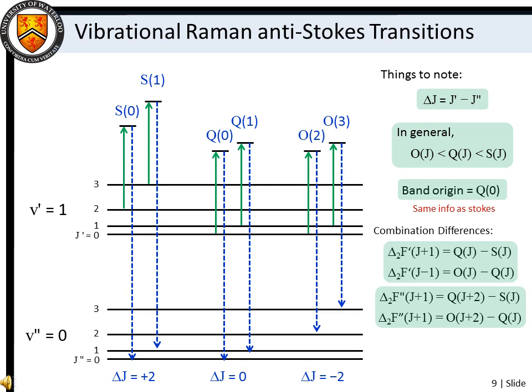In contrast to vibrational Stokes transitions, vibrational anti-Stokes lines are associated with de-excitation from a high-energy vibrational state to a low-energy vibrational state. Owing to conservation of energy, the energy lost by the molecule in this process is gained by the scattering photon. Again, we must consider the delta J equals zero plus or minus two selection rules, so S, Q, and O branches are again observed.